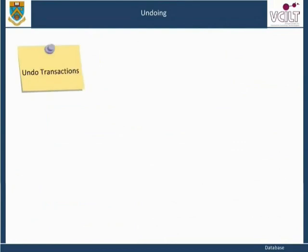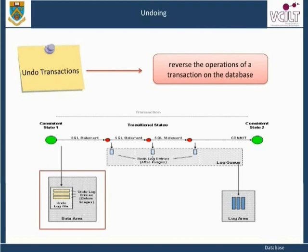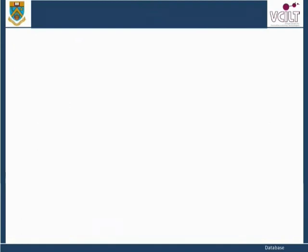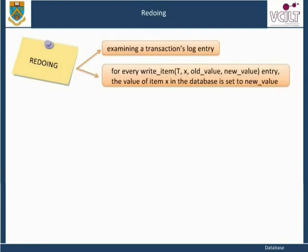Undoing: undo transactions reverse the operations of a transaction on the database. This involves examining a transaction's log entry 'write item, old value, new value' and setting the value of the item in the database to old value. Undoing a number of write item operations from one or more transactions from the log must proceed in the reverse order from the order in which the operations were written in the log. Redoing transactions is achieved by examining a transaction's log entry and, for every 'write item, old value, new value' entry, setting the value of the item in the database to new value. Redoing must proceed in the same order in which the operations were written in the log.